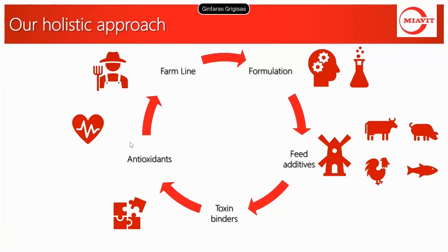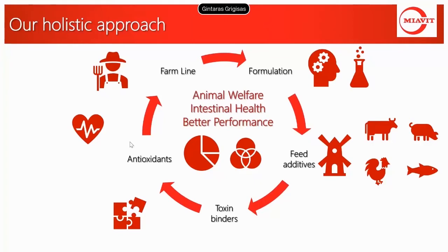The last group in this approach are the farmline products. In our case, they are additional additives given on top via feed or water, used in specific situations and only for a specific time — they can prevent problems or help to recover after challenges. All these different topics are combined into one compound feed, and only if all these factors are considered in the nutrition and adapted to local conditions can we reach our goals: good welfare like a well-developed bone frame or low incidence of feather pecking, good intestinal health for maximum nutrient absorption, and in consequence, good performance in terms of production and profitability.